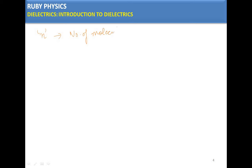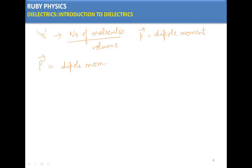If we have n (small n) number of molecules per unit volume, then we distinguish between small p and capital P. Small p is the dipole moment of a single molecule, while capital P is the dipole moment per unit volume.